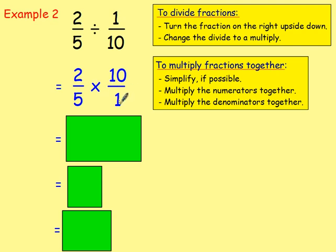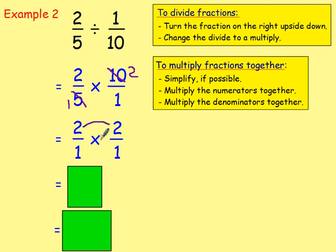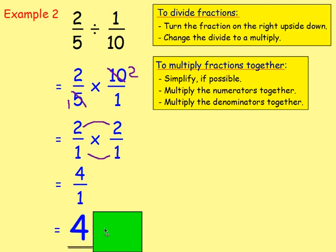Diagonally across, you've got 2 and 1 — you can't simplify them. But here we've got 10 and 5; they both divide by 5. So 5 divided by 5 is 1, and 10 divided by 5 gives us 2. Rewriting that, we've got 2 over 1 multiplied by 2 over 1. Multiply the numerators: 2 times 2. Denominators: 1 times 1. Giving 4 over 1. And 4 divided by 1 is just 4 — so the answer is 4.